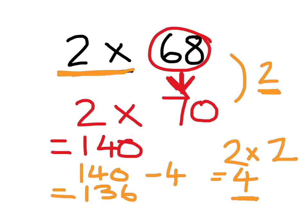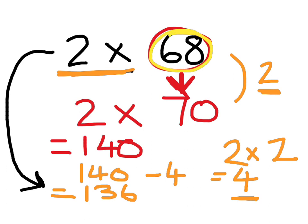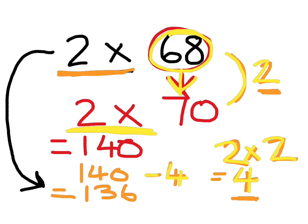So we know that 2 times 68 is 136. What we did, if we remember back, is we compensated 68 up to 70 because that was easy to do our times 2 or double strategy with. Then we discovered that the difference between 68 and 70 was 2. So we worked out 2 times that 2 to be 4. And then we took that 4 away from our 140. That gave us our final answer of 136.